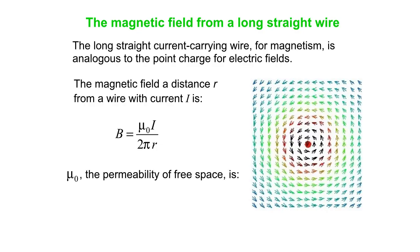Mu-naught is known as the permeability of free space, and that has a value of 4 pi times 10 to the minus 7 Tesla meters per amp. If you put mu-naught over 2 pi, that boils down to simply 2 times 10 to the minus 7 Tesla meters per amp times i over r.